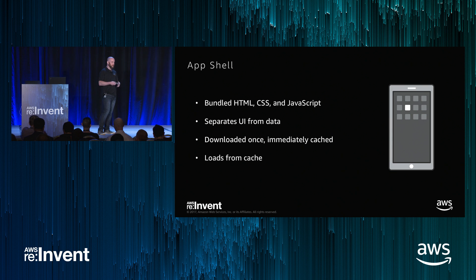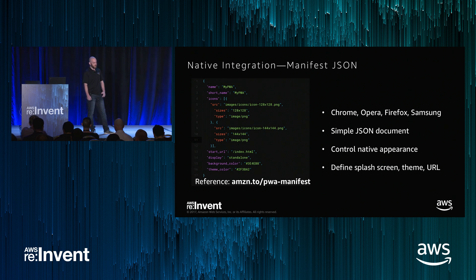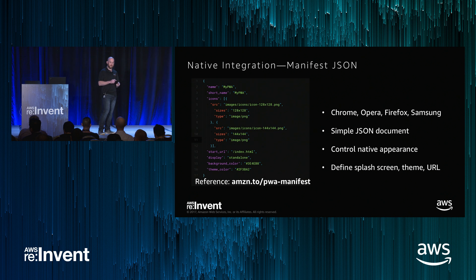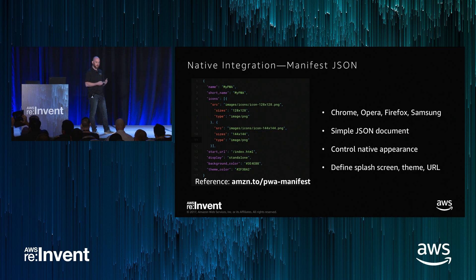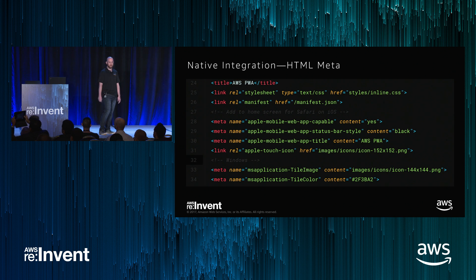If there's no connection, at the very minimum you will always load the UI, and your users will always be able to load your application. You can also check if you're online or offline. With the manifest.json file, you can do native integration — it defines the look and feel of your progressive web app. Supporting current browsers, it's essentially a simple JSON document. It controls the native appearance of the application when you add it to the home screen — defines the icons, all the sizes, the things you would do when you publish to the App Store. You can define a splash screen, the look and feel of the status bar on top. The user essentially doesn't see any browser at all. For other platforms, even Windows, you can define these things in the HTML metadata for browsers that don't support the manifest file.